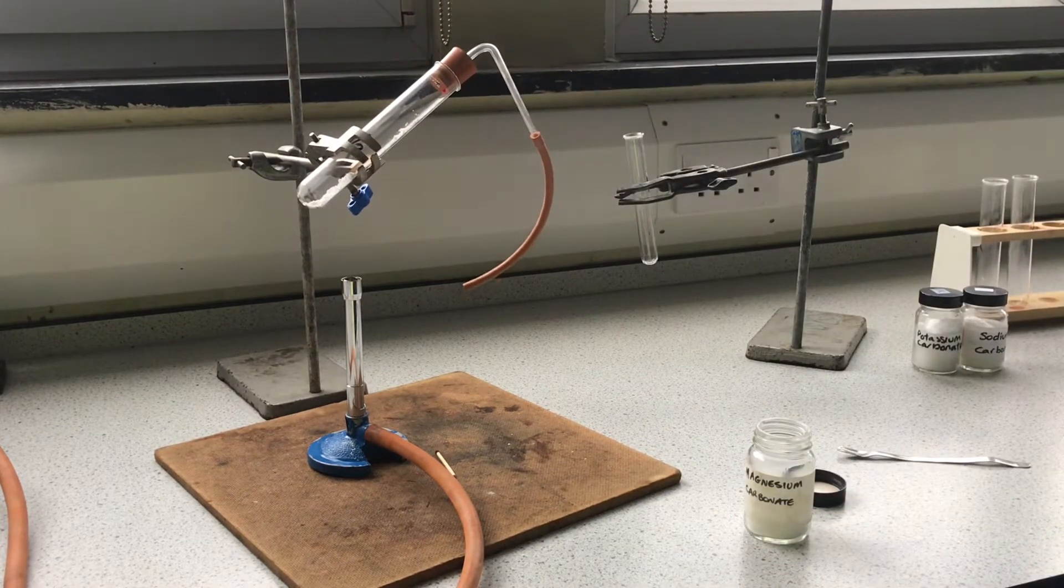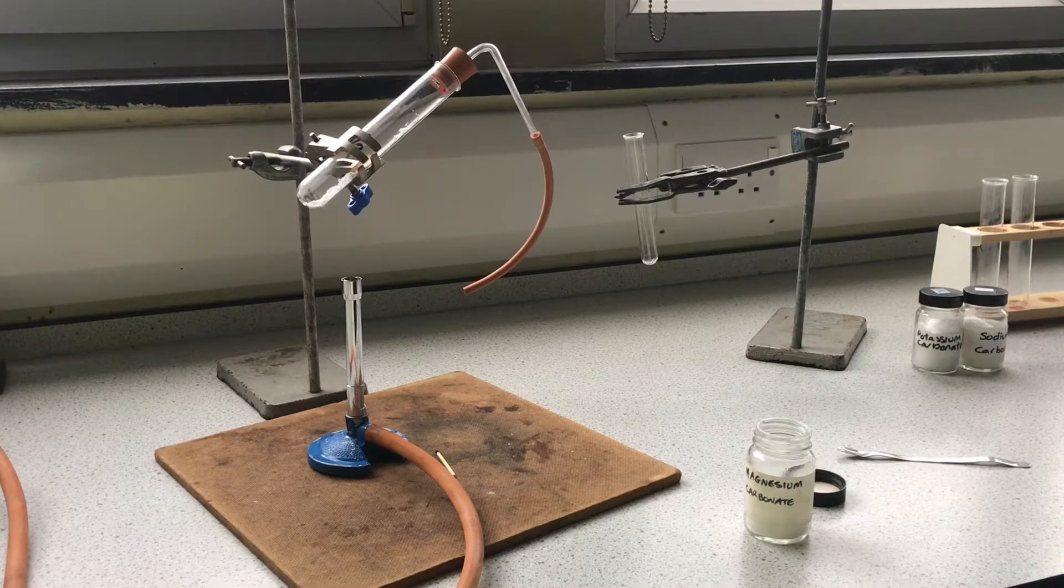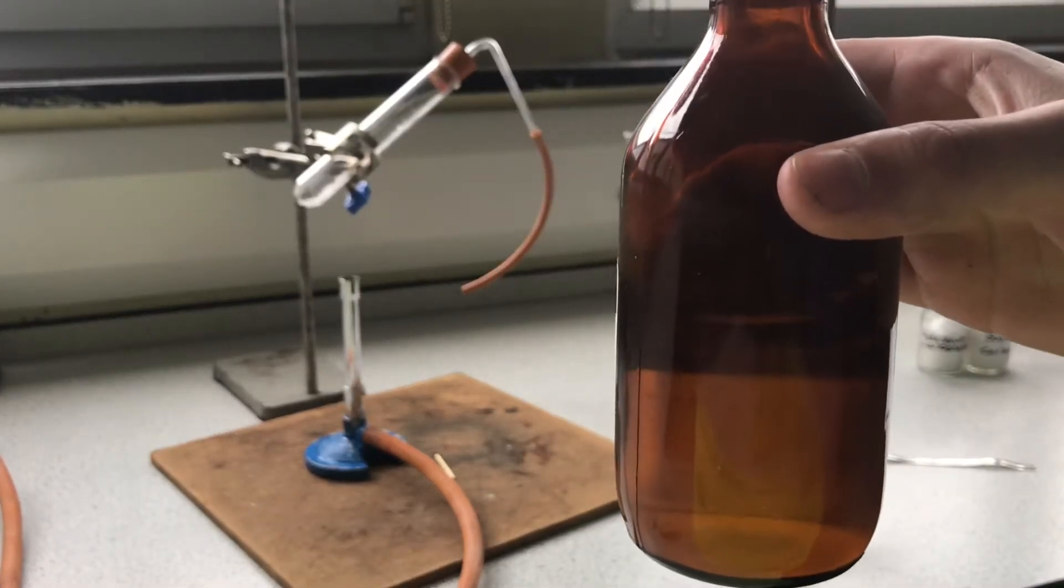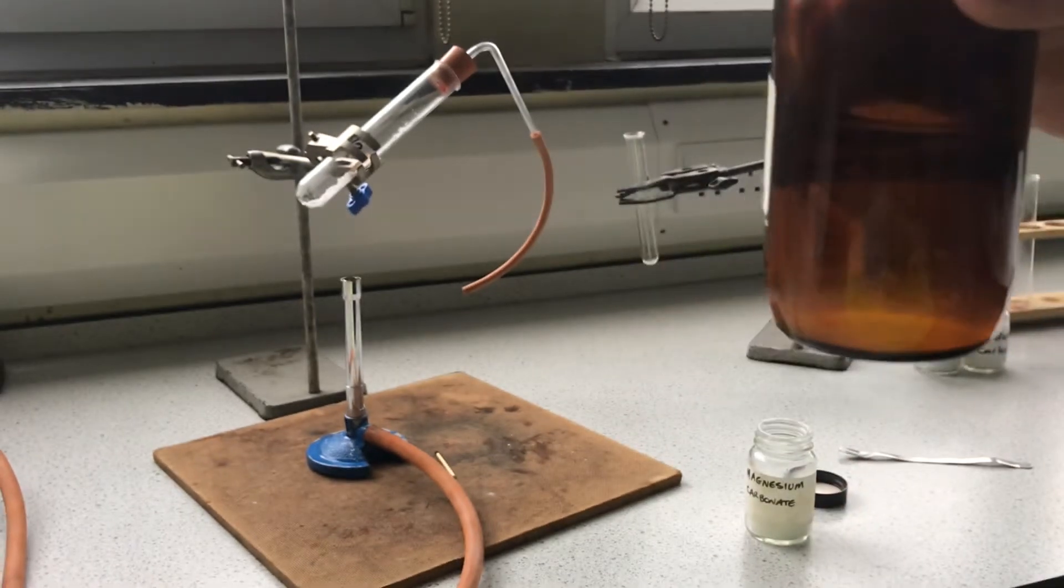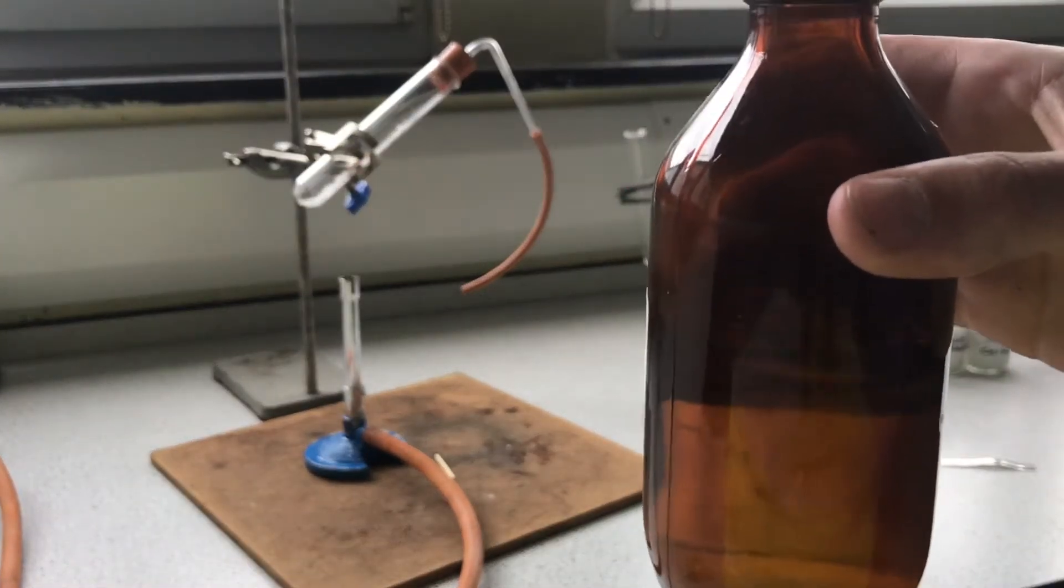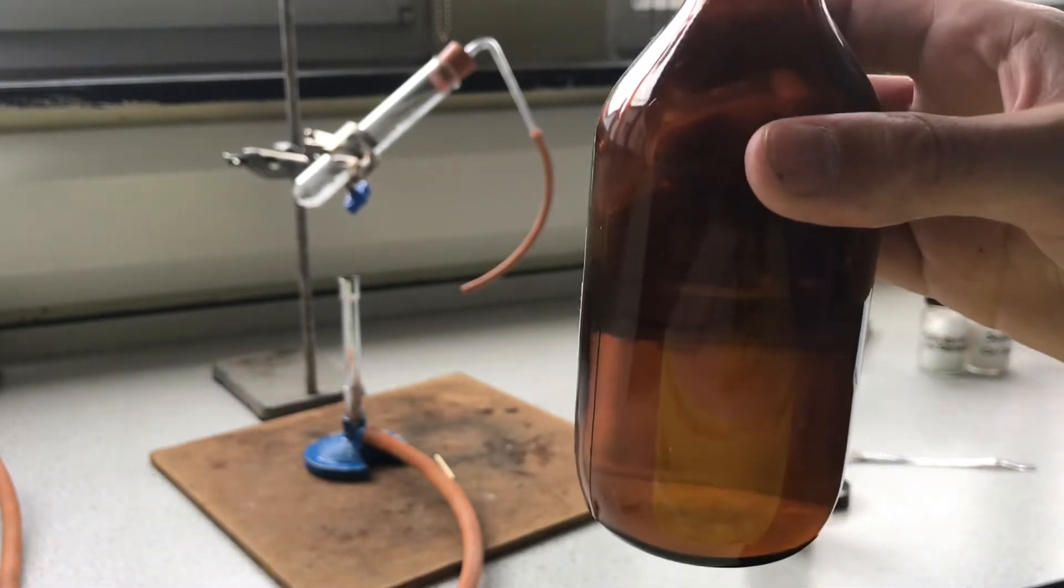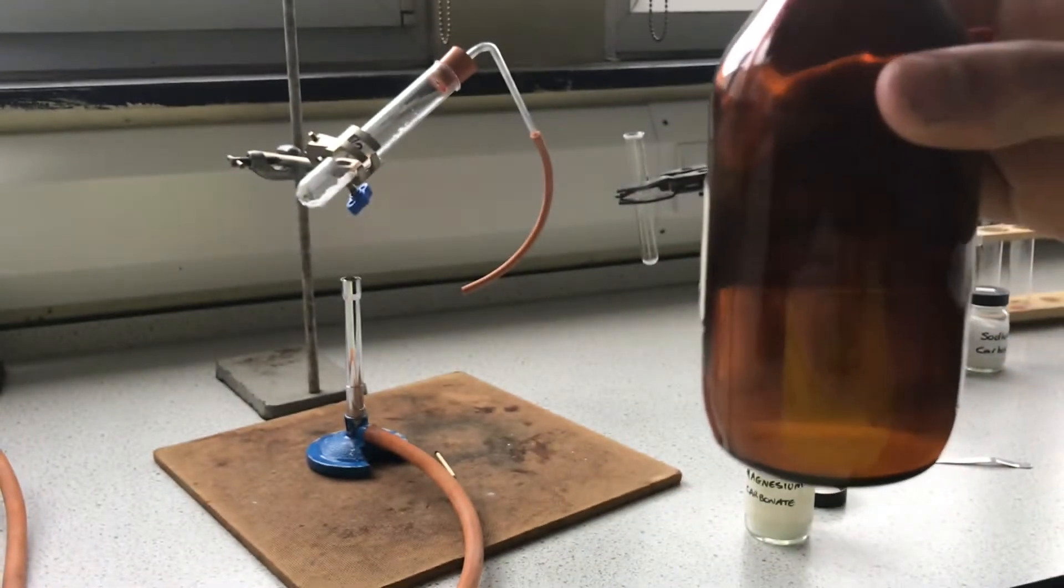In my test tube I will be placing some lime water. Lime water is a clear solution. Lime water is used to test for the presence of carbon dioxide. If lime water turns cloudy, that means carbon dioxide is present.